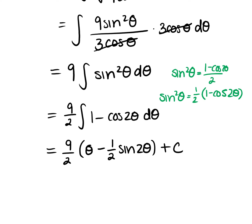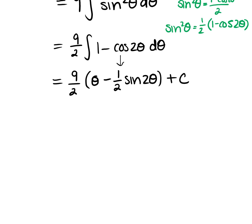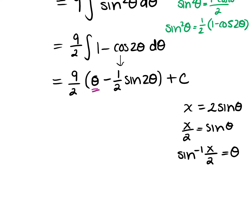Taking the antiderivative: 1 becomes θ, and the antiderivative of cos 2θ brings down a ½, so we get sin 2θ times ½. We started with x's so we need to convert back. I know x = 3·sinθ, so sinθ = x/3. And theta itself equals sin⁻¹(x/3).